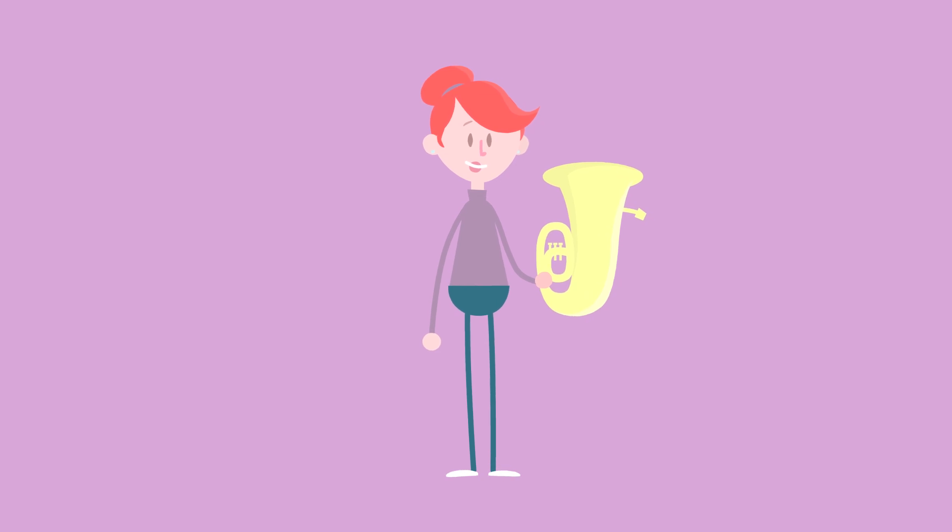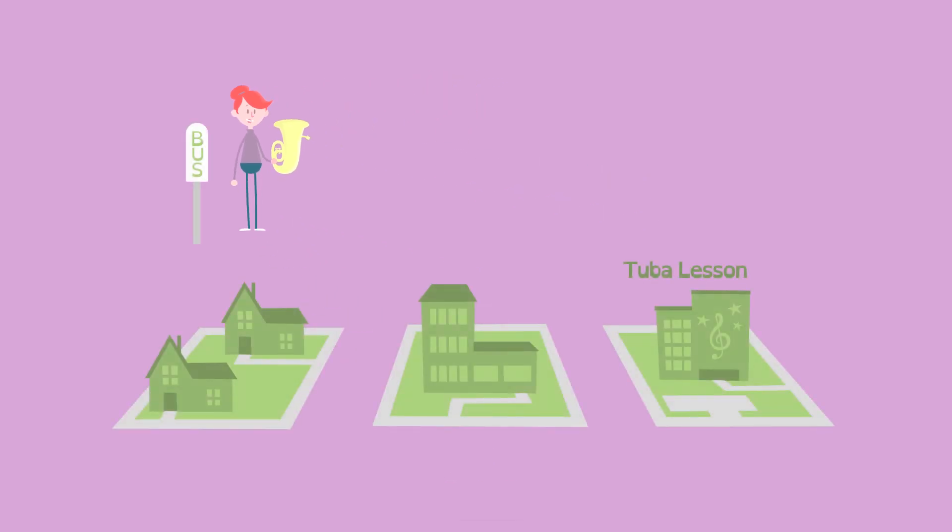Here's Lucy. She needs to walk to her tuba lesson, three blocks from the bus stop. After walking two blocks, she realizes she dropped her sheet music. She goes back one block, finds it, then continues to her lesson.